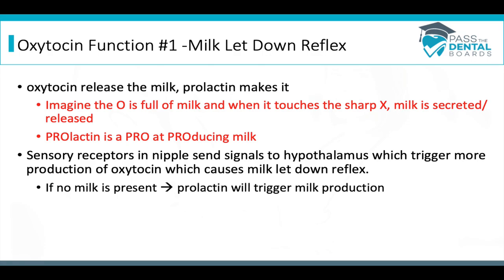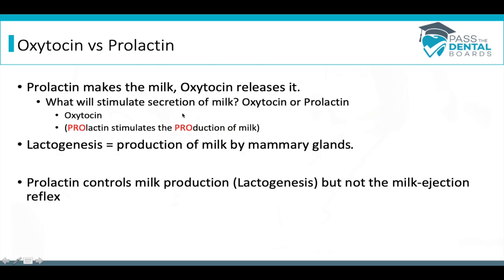Sometimes they'll test you on the trigger for the milk letdown reflex. Sensory receptors in the mammary gland send signals to the hypothalamus, which then signals the posterior pituitary gland to trigger the release of oxytocin, causing the milk letdown reflex. If there's no milk to let down, that's when prolactin comes in to create it. On exams, if asked what stimulates milk secretion, oxytocin is the answer — not prolactin, which produces the milk.